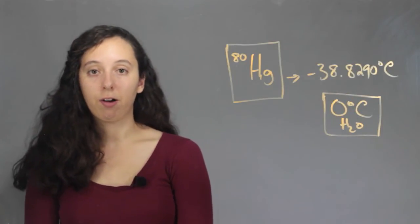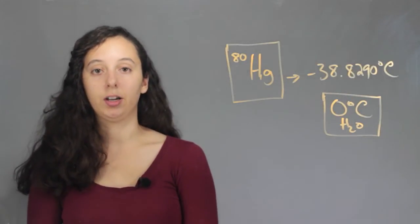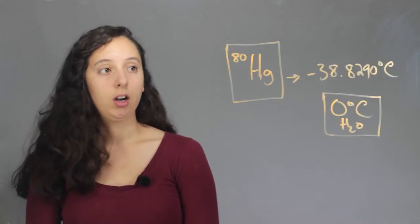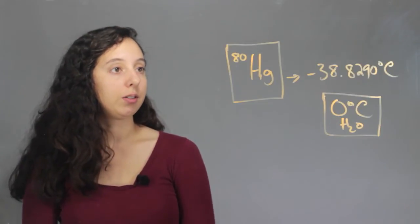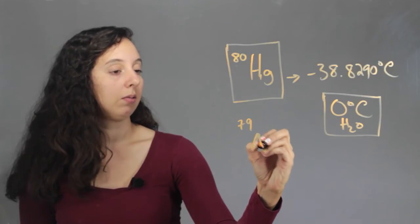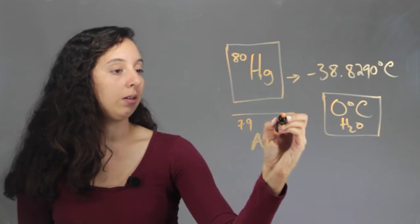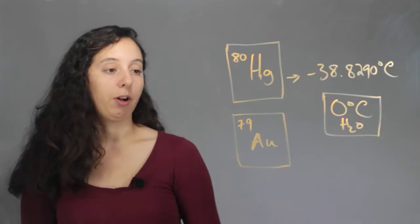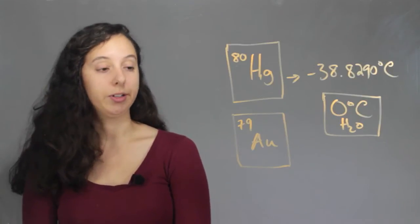And to show you how rare mercury is, that it's a liquid at room temperature, we can compare it to its cousin gold, which is actually just one to its left on the periodic table. It's element number 79.